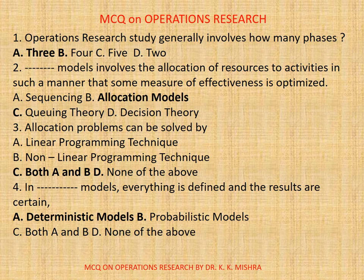Question 4. In Dash Models, everything is defined and the results are certain. A, Deterministic Models. B, Probabilistic Models. C, Both A and B. D, None. Correct option is A, Deterministic Models.